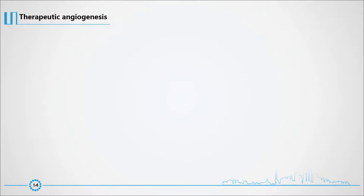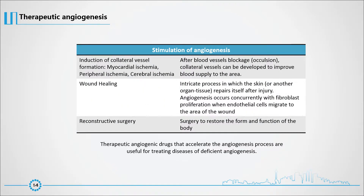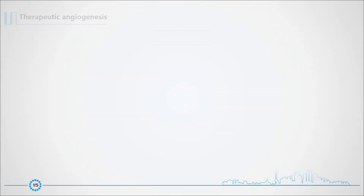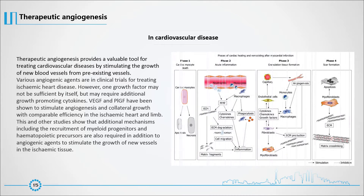Therapeutic angiogenic drugs that accelerate the angiogenesis process are useful for treating diseases of deficient angiogenesis. Therapeutic angiogenesis provides a valuable tool for treating cardiovascular diseases by stimulating the growth of new blood vessels from pre-existing vessels. Various angiogenic agents are in clinical trials for treating ischemic heart disease. However, one growth factor may not be sufficient by itself but may require additional growth-promoting cytokines. VEGF and PLGF have been shown to stimulate angiogenesis and collateral growth with comparable efficiency in the ischemic heart and limb. Additional mechanisms including the recruitment of myeloid progenitors and hematopoietic precursors are also required to stimulate the growth of new vessels in ischemic tissue.